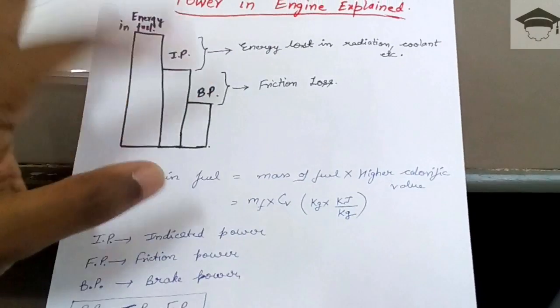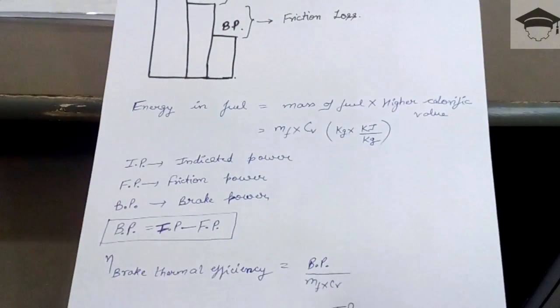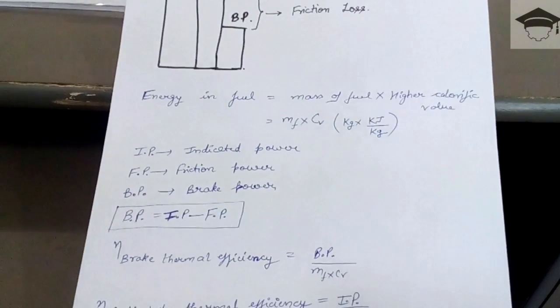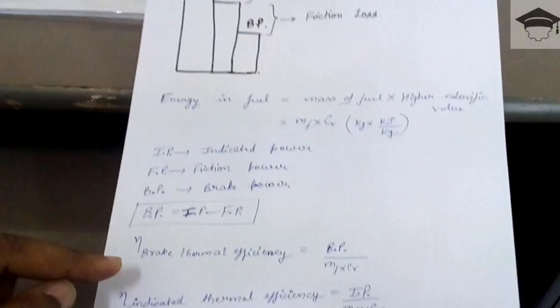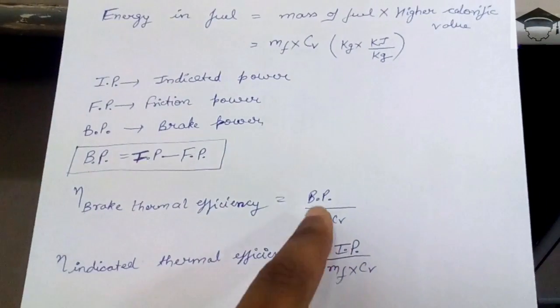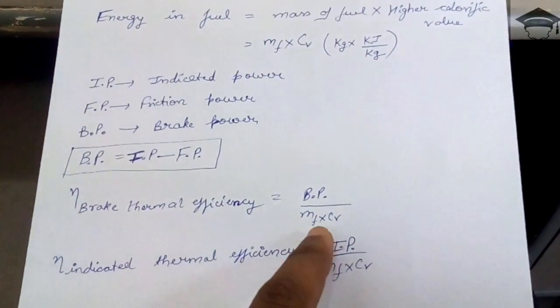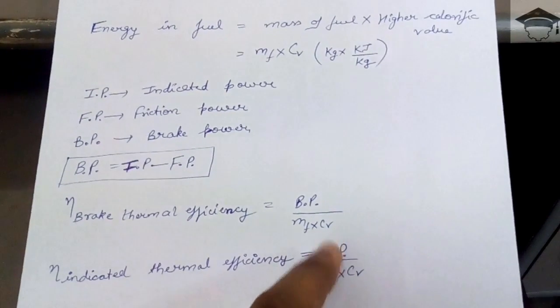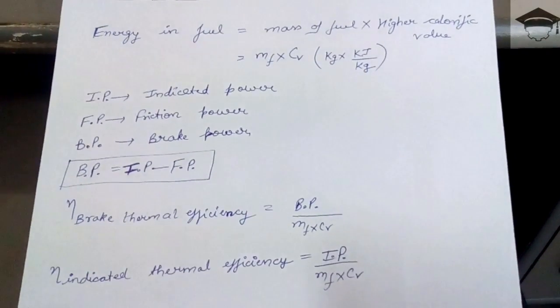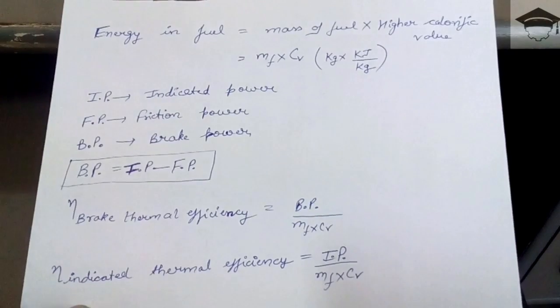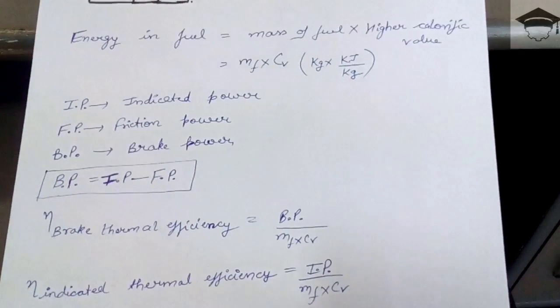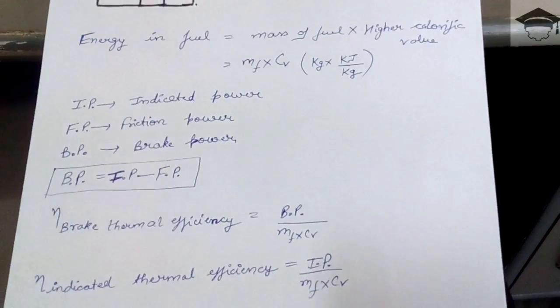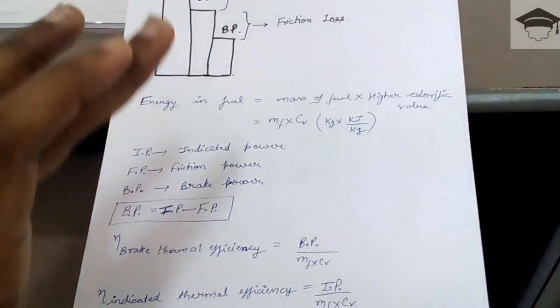There are two types of efficiencies associated with the engine. The first is brake thermal efficiency, which is the ratio of brake power to the energy in the fuel (mf × CV). The second is indicated thermal efficiency, which is the ratio of indicated power to mf × CV.